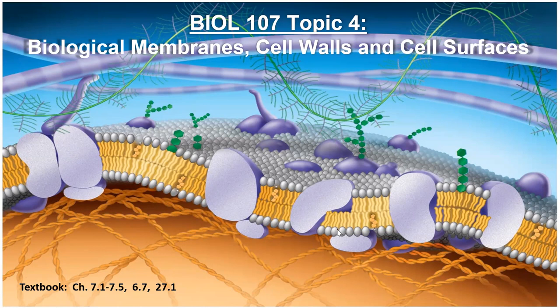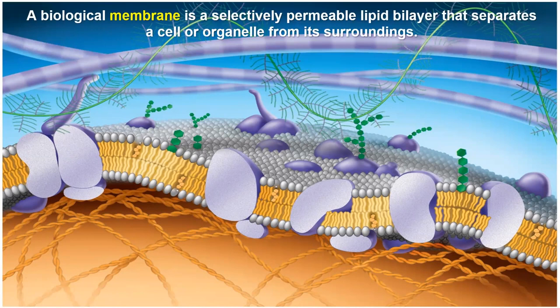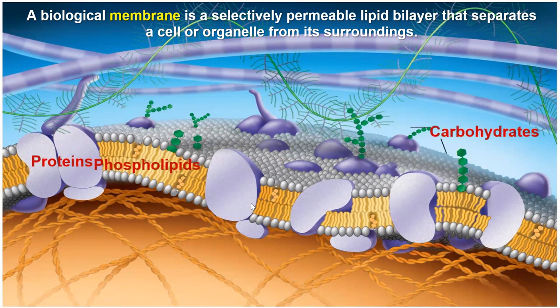Let's talk about what a membrane is. A membrane is a selectively permeable lipid bilayer that separates the cell or organelle from its surroundings. The membrane is made of different parts: phospholipids, proteins, and carbohydrates. There's also an extracellular matrix outside the cell and a cytoskeleton inside the cell — we'll get to those eventually.